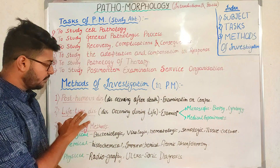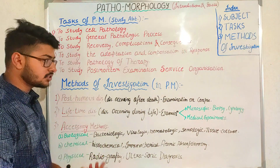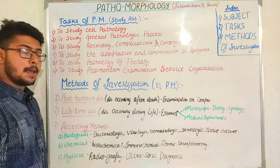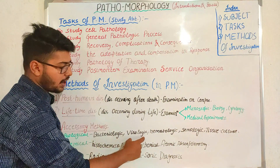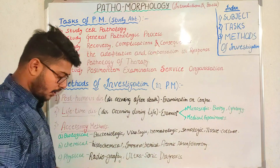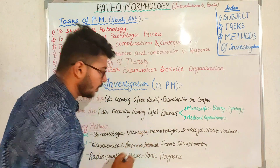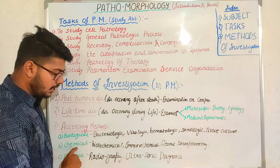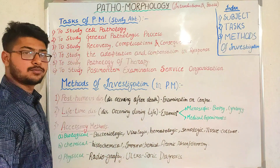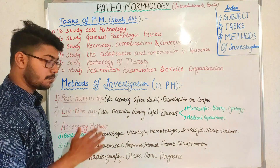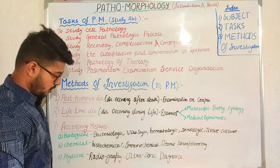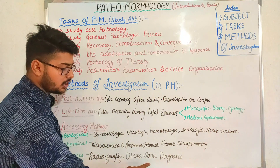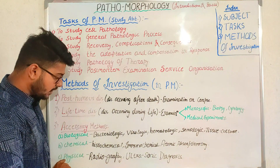Accessory methods are other investigation procedures beyond those already mentioned. These include biological methods (such as tissue culture and serology, studying how bacteria or viruses affect blood), chemical methods (histochemical, immunochemical, and atomic absorptivity tests to know the biochemistry changes in cells during disease), and physical methods (radiography and ultrasonic diagnosis). These are the three kinds of accessory methods that help investigate cells during disease conditions.